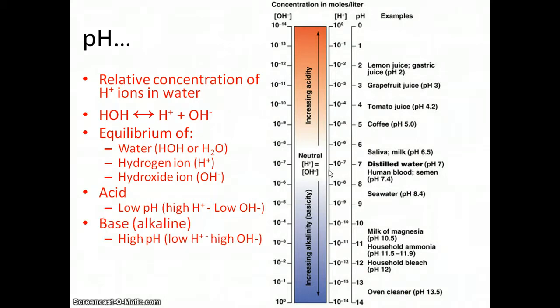If something is basic, its pH is above 7. It has a higher number, a lower concentration of hydrogen ions, and a higher concentration of hydroxyl ions. If something is neutral, it's said to have a pH of 7 in the middle of the scale, and the hydrogen and hydroxyl ion concentrations are the same.